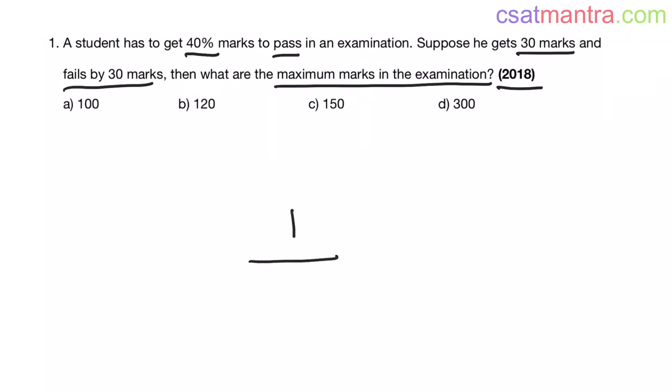So, he got 30 marks and he failed by 30 more marks. That means 60 marks are the pass marks, and pass percentage is 40%. So, 40 percentage is equal to 60 marks and we are asked to find total marks, that is equal to 100%. 100% is equal to how much?